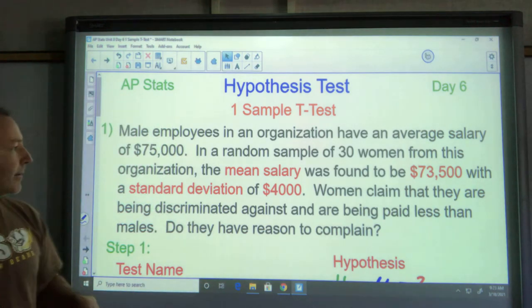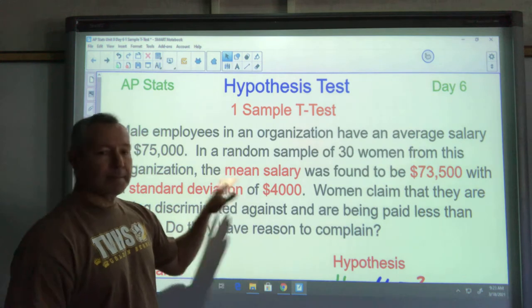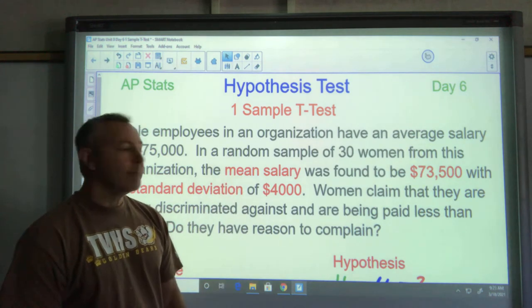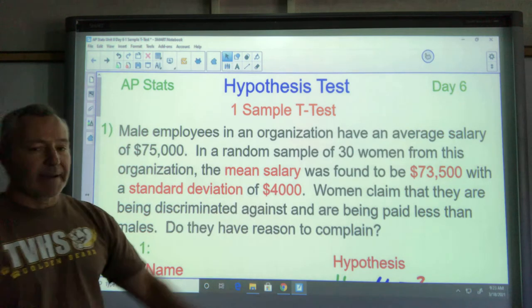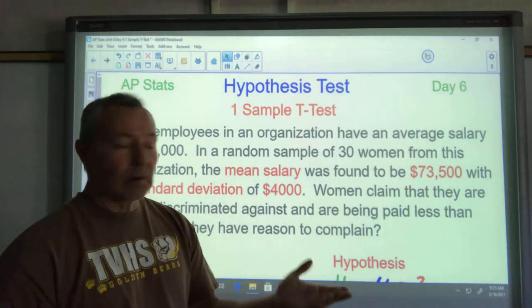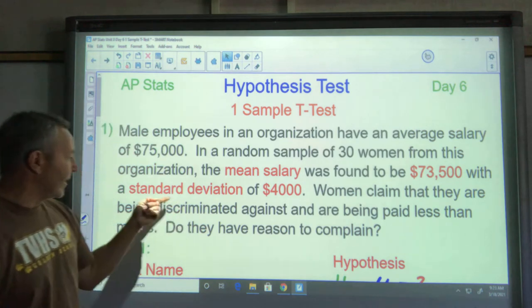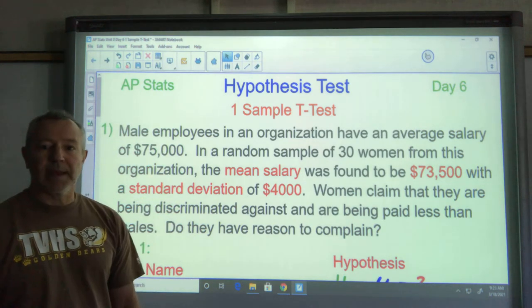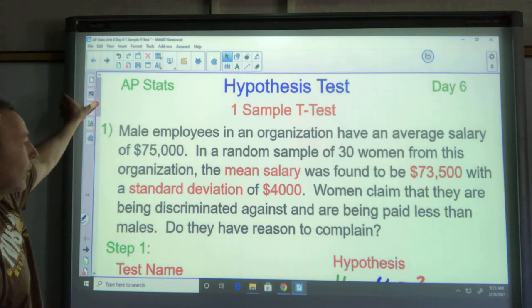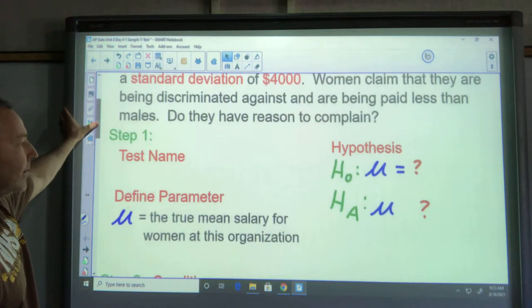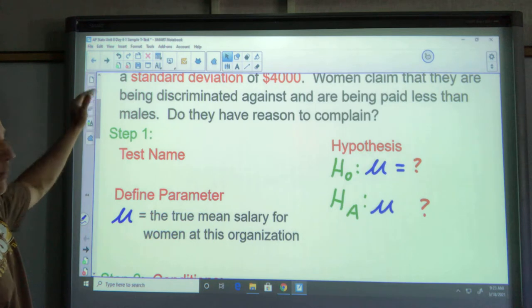Notice it's a mean problem. It says mean or average, but it's not a proportion. Seventy three thousand five hundred is not a salary out of a total like a percentage or anything. Also note they give you a standard deviation; that's a great indicator that you're doing a mean problem.